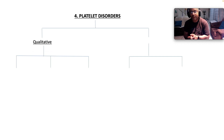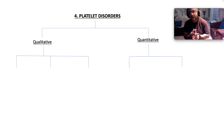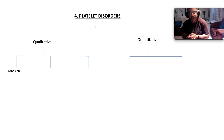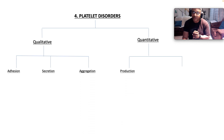From a conceptual standpoint, platelet disorders have to be categorized into either qualitative issues, which is a functional problem, and quantitative issues, which is a number problem, otherwise called thrombocytopenia — below 150. Qualitative problems have to do with either adhesion problems, secretion problems, or aggregation problems. Quantitative is due to either diminished production or increased accelerated destruction.